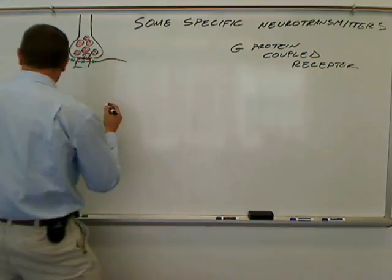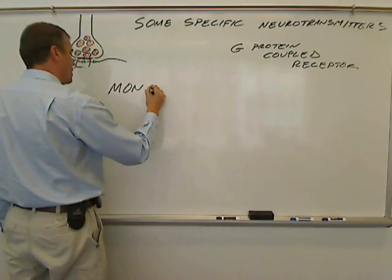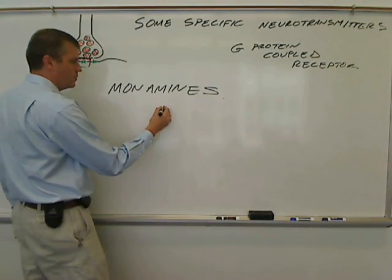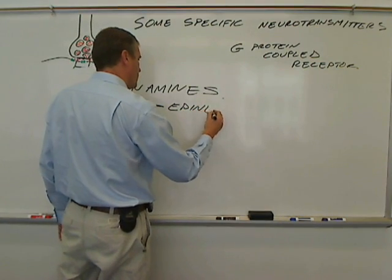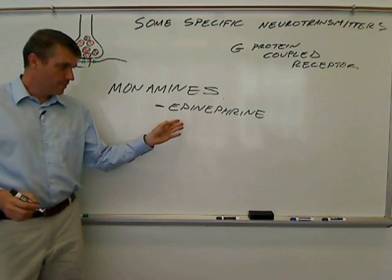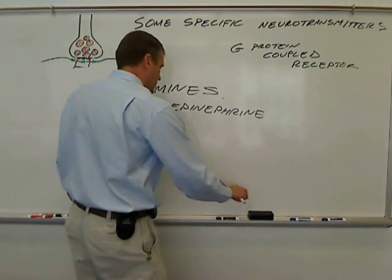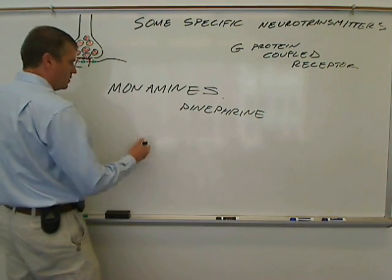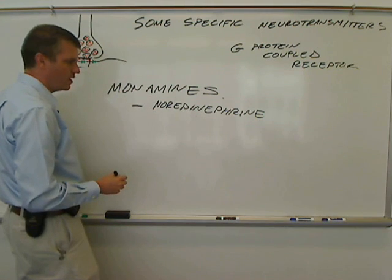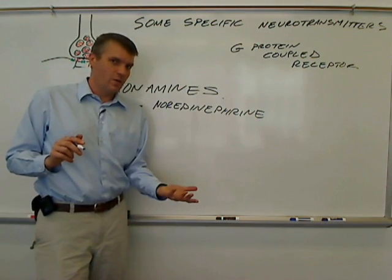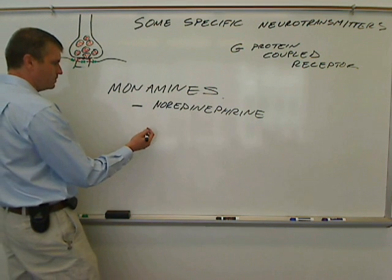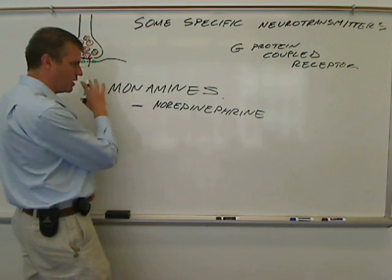The next thing I want to talk about is actually a class of neurotransmitters, and those are monoamines. To give you an example of a monoamine, epinephrine is a monoamine. The one that's actually released from neurons is called norepinephrine. Epinephrine is the hormone version — it has a very similar molecular structure and it binds to the same receptors, but epinephrine is the hormone. Norepinephrine is released by neurons into synaptic clefts.